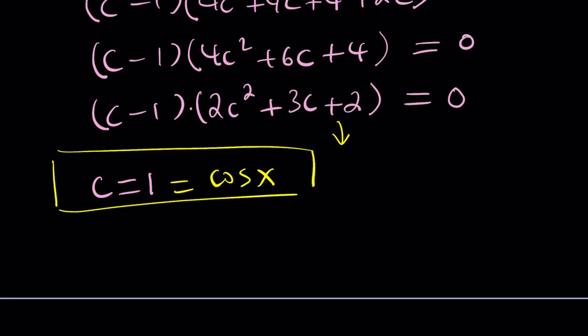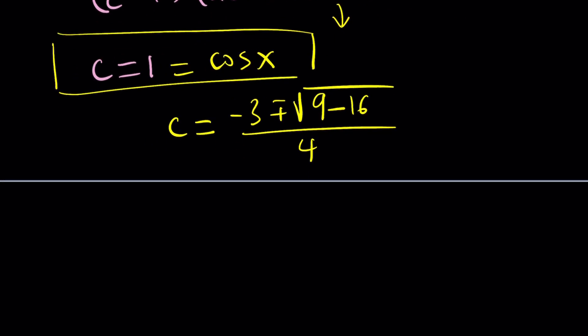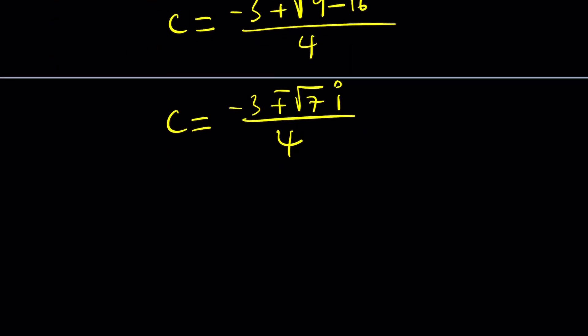If you use the quadratic formula, c becomes negative b plus minus the square root of b squared, which is 9, minus 4ac, which is 16. Uh-oh, we got complex solutions. Non-real complex solutions. So these are going to be like plus minus root 7i divided by 4. So how do you solve an equation whose cosine is equal to a complex number like this? Negative 3 plus root 7i over 4.